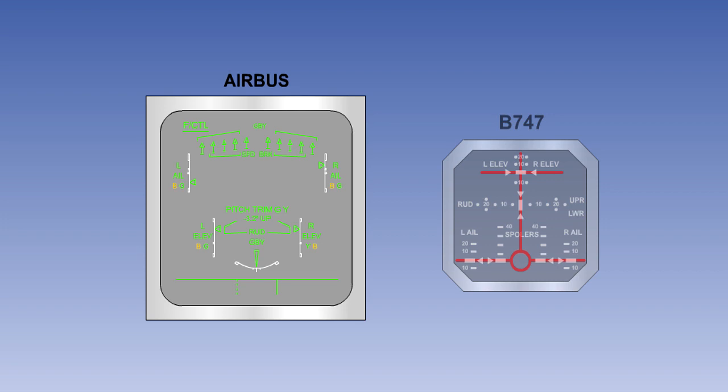The letters beside the individual surface indicators show the status of the hydraulic systems operating the surface. They are normally green but change to amber in the case of a failure. In this graphic, the blue hydraulic system has failed.